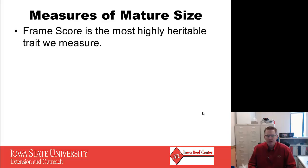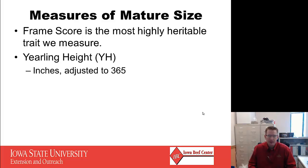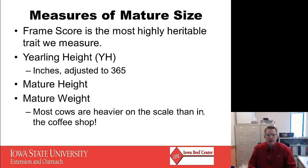Frame score is the most highly heritable trait we measure — we can change how big our cows are faster than almost anything else. It is basically measured at the hip. Yearling height is a trait used in Angus, expressed in inches adjusted to 365 days of age, and then there is mature height and mature weight measured thereafter. Most producers, especially here in the Midwest, tend to underestimate how much their cows actually weigh compared to what they'd say at the coffee shop.